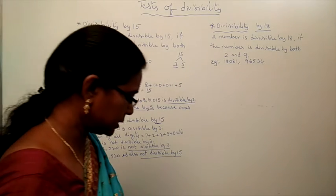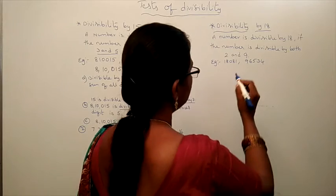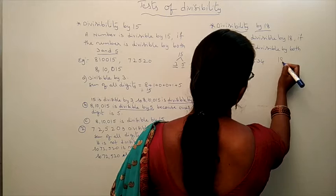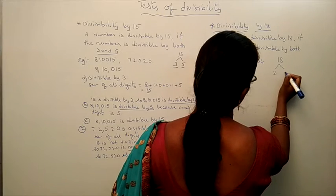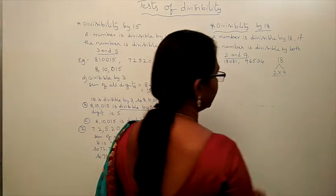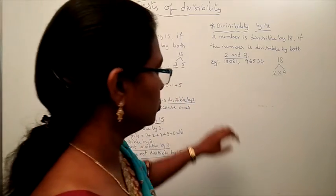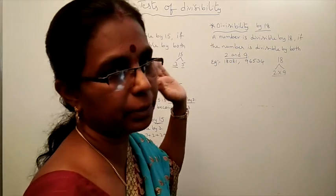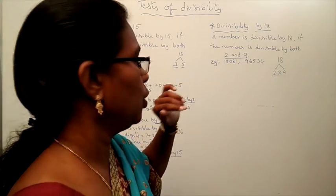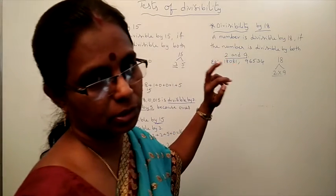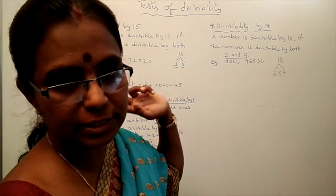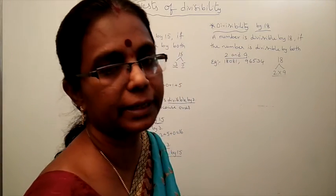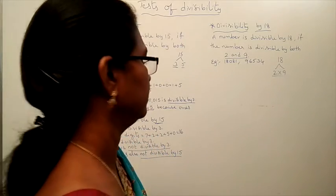A number is divisible by 18 if the number is divisible by both 2 and 9. Because what are the factors of 18? 2 and 9. So 2 and 9 are the factors of 18. If a number is divisible by 2 and 9, then that number is divisible by 18. What is the rule of 2? The last digit is 0, 2, 4, 6, or 8. What is the rule of 9? The sum of the digits is divisible by 9, then it is divisible by 9.